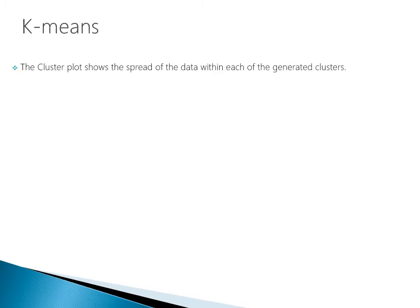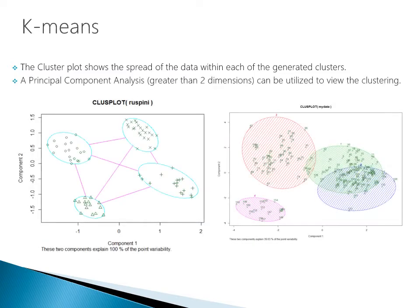Back to our k-means algorithm: the cluster plot shows the spread of the data within each of the generated clusters. A principal component analysis of greater than two dimensions can be utilized to view the cluster in a two-dimensional space of two components, showing where points fall within each cluster. The red, green, blue, and purple circles show where data points are falling within each cluster and the size of those clusters. There are many types of graphical plots available to see how data points fall within clusters, and these are already available in the R program.